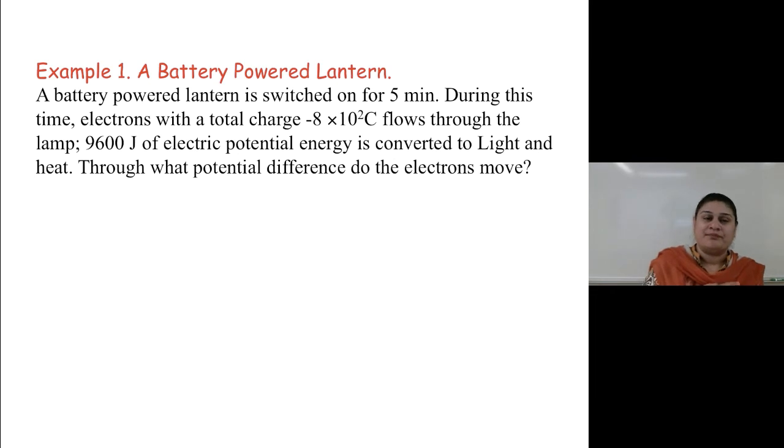Now, let's do an example. A battery-powered lantern is switched on for five minutes. During this time, electrons with a total charge of minus 8 times 10 to the 2 coulomb flow through the lamp. 9,600 joules of electrical potential energy is converted to light and heat. Through what potential difference do these electrons move?